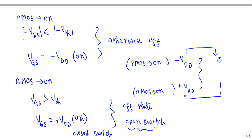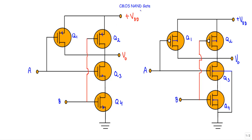This is the circuit structure of the CMOS NAND gate using a three-terminal MOSFET symbol, and this is the circuit structure using a four-terminal MOSFET symbol. The transistors Q1 and Q2 are p-type enhancement MOSFETs, and the transistors Q3 and Q4 are n-type enhancement MOSFETs.